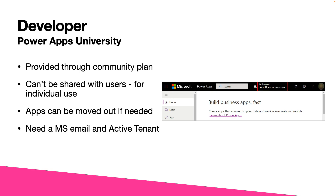The last environment type is called developer, and this is not to be confused with the sandbox or development environment. This is an environment solely used for a single developer — their personal area to build Power Apps, Power Automate flows, and test. It's provided through the community plan, so it's free. It can't be shared with users; it's for individual use. Apps can be moved out if needed, and you do need a Microsoft email as well as an active tenant to use the developer environment. The high-level overview: it's a separate environment solely for an individual developer to test in their own area.